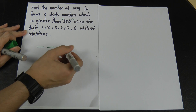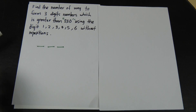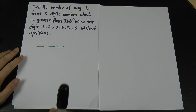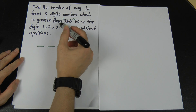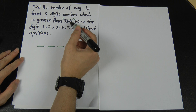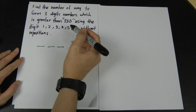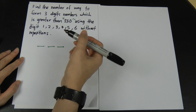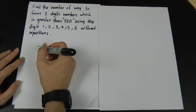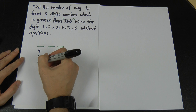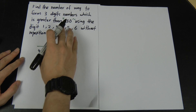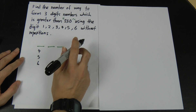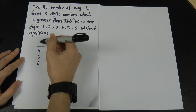We need to form a three-digit number using digits 1 through 6. In order to make the number greater than 350, we have some conditions. I will divide this into two cases. For Case 1, I assume the first digit is 4, 5, or 6, because when the first digit is 4, 5, or 6, the number is definitely bigger than 350.